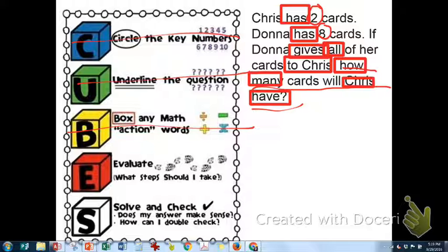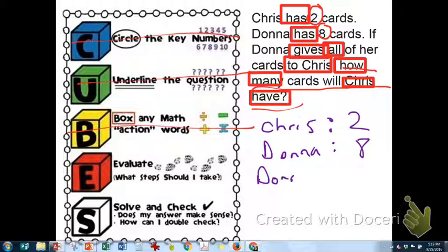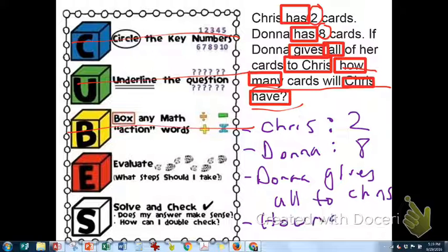So the evaluate step. This is the most important step I feel. The evaluate step. What I do is I have them write down all the stuff they boxed and circled, but in a way that's organized. So I'm going to say Chris has two. And I'm not going to write that they're cards. I don't care that they're cards. Donna has eight. Donna gives all to Chris. And how many does Chris have? So the question is how many does Chris have?